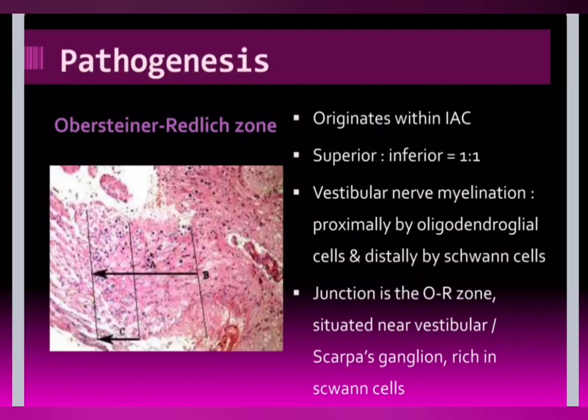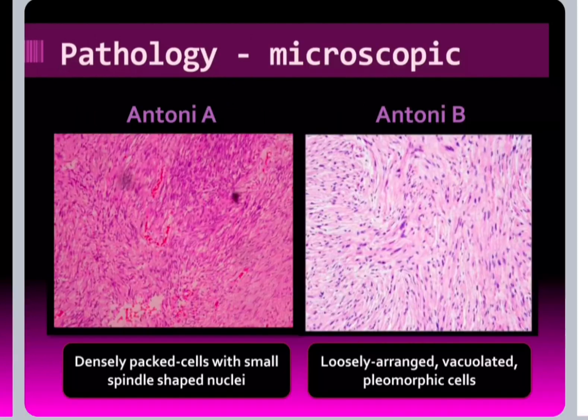Pathologically it originates from the superior and inferior vestibular nerve — the ratio is almost the same, though some books code it as more common in the superior vestibular nerve. There is a junction called the Obersteiner-Redlich zone near the scarpa ganglion, and it usually arises from there. Microscopically it can be Antoni A type or B type depending upon the arrangement of the nuclei.